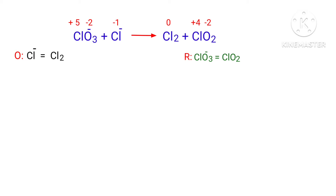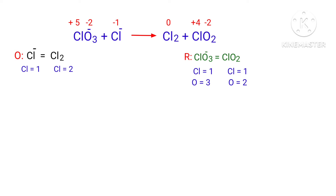Now balance the number of atoms in the two half reactions. In the oxidation half reaction, to balance the chlorine atoms, we need to put a coefficient of 2 in front of Cl-. Now the number of atoms are balanced in the oxidation half reaction.